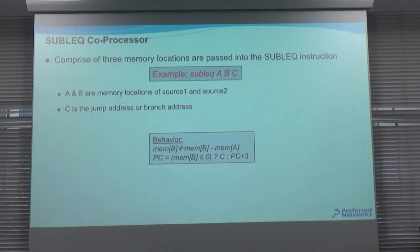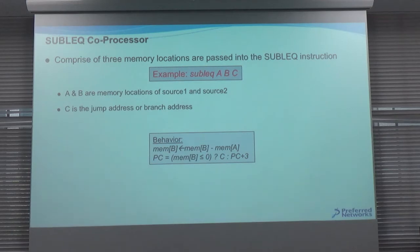To perform this operation, we first get the memory value of B, subtract it from memory value A, and put the result back. If the result is less than zero, we jump to address C. Otherwise we increment to the next program counter. Since we have three memory locations, we need to jump to the next address accordingly.